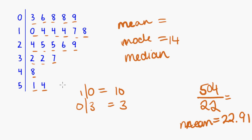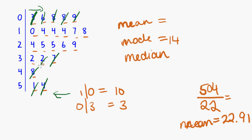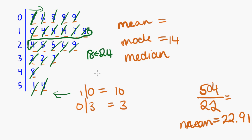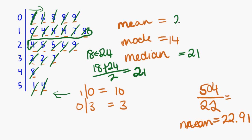Now for the median, we can use the crossing-off method just as easily with a stem plot as with a list. Remembering that the top of the data is the highest numbers and the bottom is the lowest, I cross off balanced numbers from both ends — working inwards from the top stems and upwards from the bottom. After crossing off, I'm left between 18 and 24, so the median is halfway between those two: 18 plus 24 divided by 2 equals 21. So we had a mean of 22.91, a mode of 14, and a median of 21.